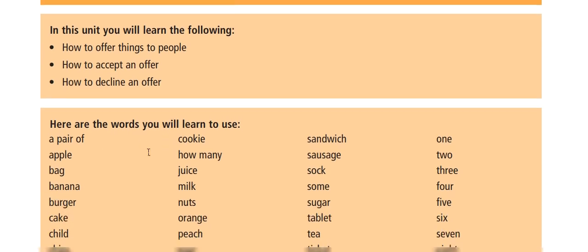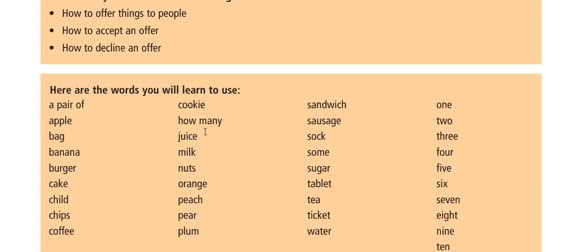Here are the words you will learn to use: a pair of, apple, bag, banana, burger, cake, child, milk, chips, coffee, cookie, how many, juice, milk, nuts, orange, peach, pear, sandwich, sausage, sock, some sugar, tablet, tea.